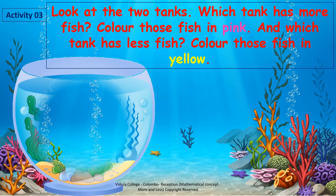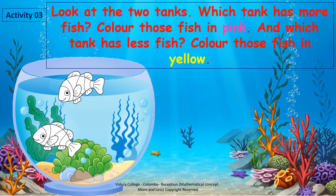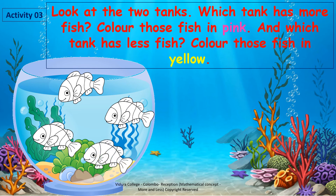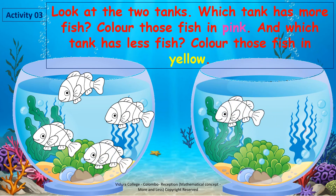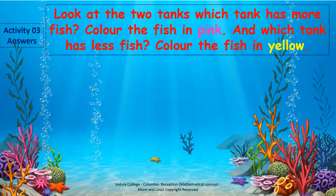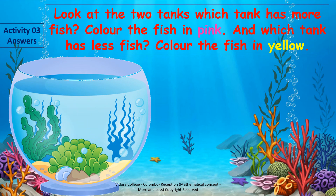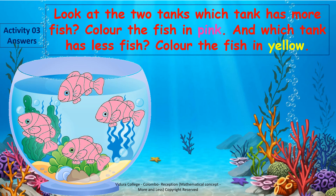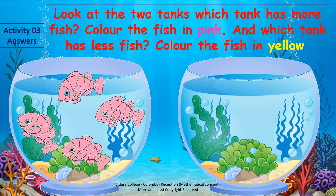Activity number 3: Look at the 2 tanks. Which tank has more fish? Colour the fish in pink. Which tank has less fish? Colour the fish in yellow. Let's see the answers. We select the tank which has more fish and colour the fish in pink, then colour the fish in yellow for the tank which has less fish.